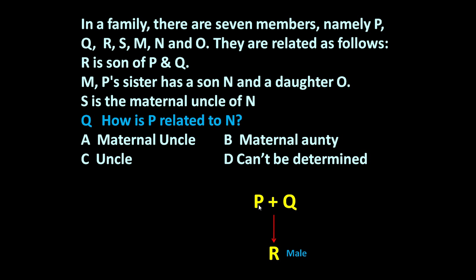P plus Q are husband and wife, but any other information is not available — whether P is the father or Q is the father is not clear presently. M is P's sister, so M is a female member.